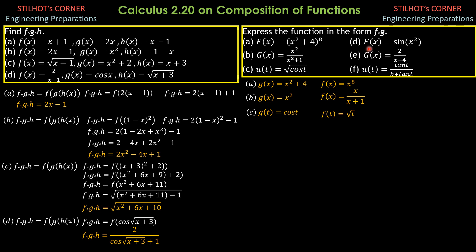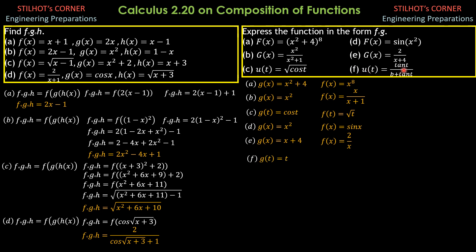For part d, g of x should be x squared and f of x should be sine of x. Then part e, g of x should be x plus 4 and f of x should be 2 over x. Then part f, f of g of t should be tangent of t, and f of t should be t over b plus t. That's it for this video. I hope that you understood the solutions and the explanations.